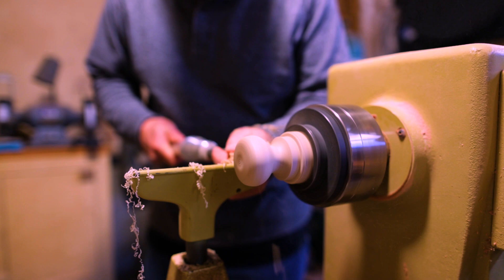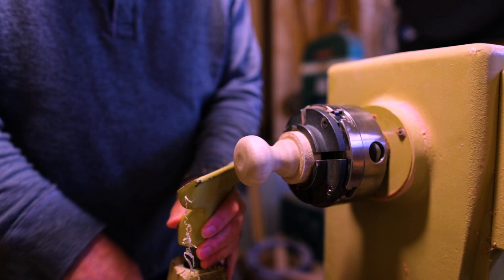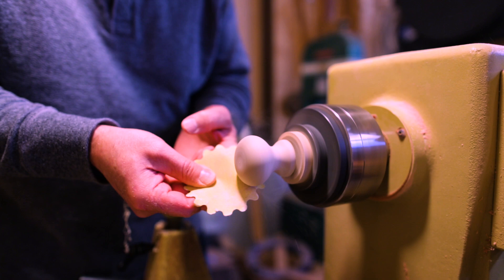I only had a certain amount of height underneath the dust collection hood so I had to stay within that. I think it was two and a half inches or something like that. Then I could part off the knob and then cut off the last little bit with the saw.